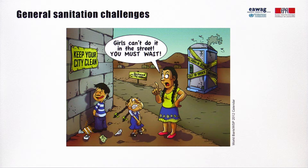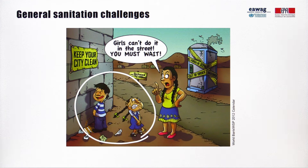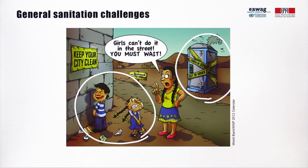Some of the gender-related challenges are illustrated in this picture. Inequalities in access: especially in public spaces, particular groups such as women, elderly, children and handicapped people are more strongly affected by the absence of adequate sanitation. Health and safety aspects: especially women and girls can encounter various problems in connection with non-appropriate sanitation, like violence occurring as a result of walking to a public toilet, or infections from waiting too long to urinate.